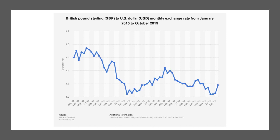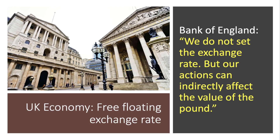The British pound is a free floating exchange rate, as is the US dollar. Looking at GBP/USD from early 2015 to autumn 2019, the pound has been on a broadly downward trajectory — particularly after the Brexit referendum in 2016 — ranging between about $1.20 and nearly $1.60. With a free float, the Bank of England doesn't directly intervene, so large exchange rate movements can occur. As the Bank of England states on its website: 'We do not set the exchange rate. The UK has a free floating exchange rate. But our actions can indirectly affect the value of the pound' — meaning interest rates and QE can have an indirect effect even without specifically targeting the exchange rate.